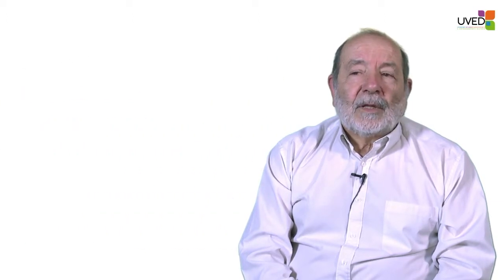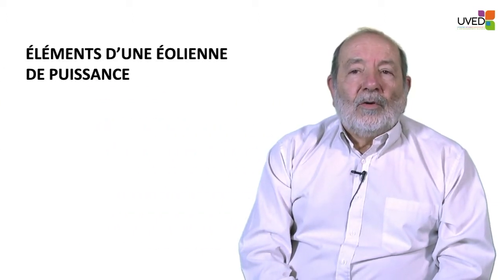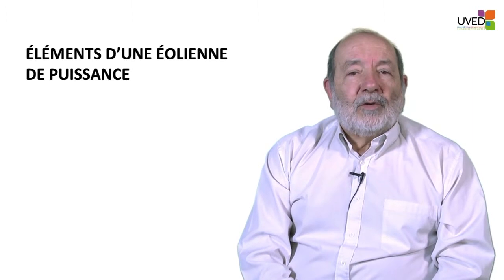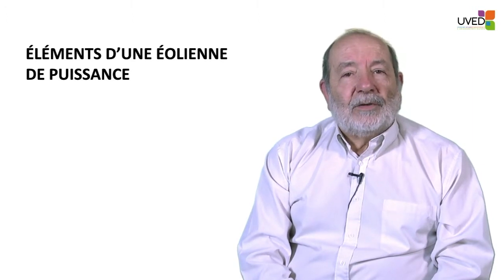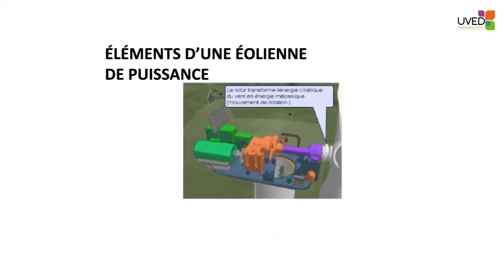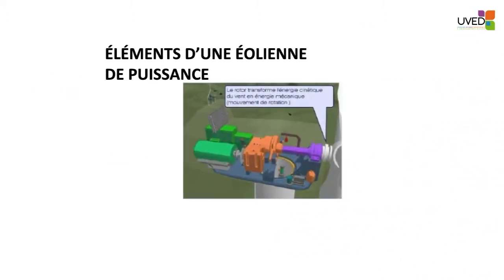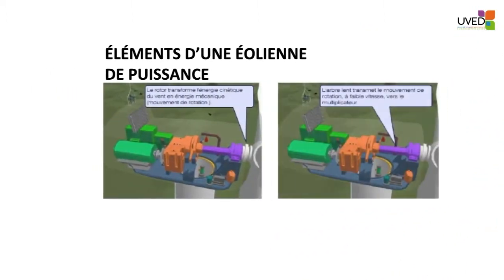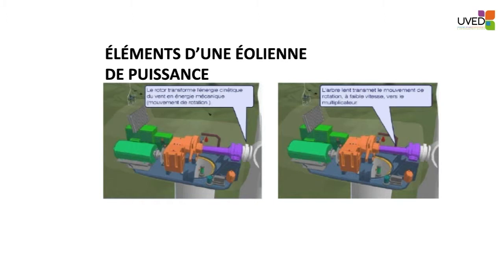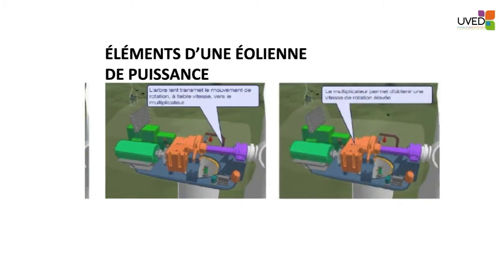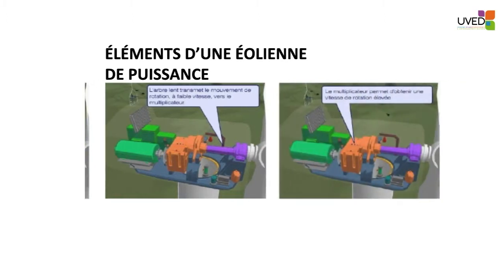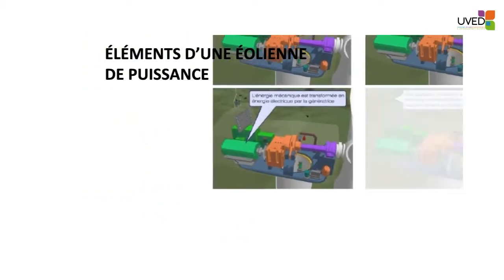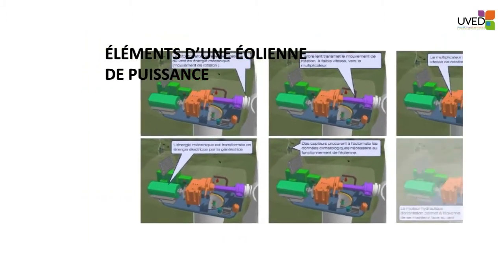The blades are either fixed or mobile around the axis; they rotate around the axis. As seen in the picture on the right-hand side, the rotor captures the kinetic energy of the wind, converts it into mechanical energy, and sends that mechanical energy to a gearbox.